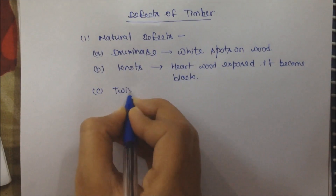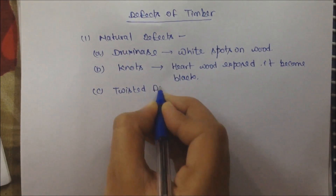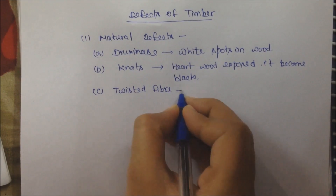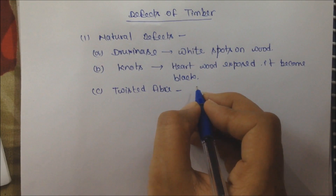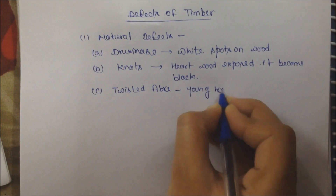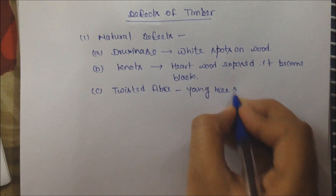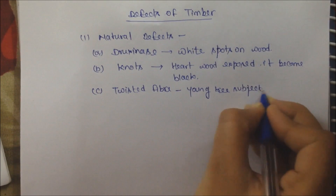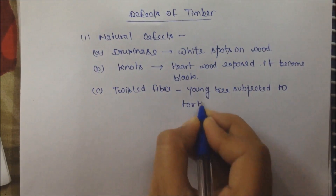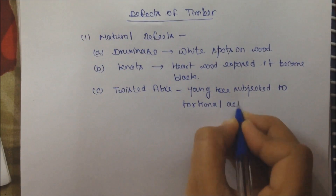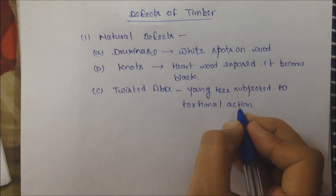Third is Twisted Fiber. When the tree is young, it rotates from the wind and the fibers are twisted. Then the strength increases, and we use it as a pole and railway sleepers.